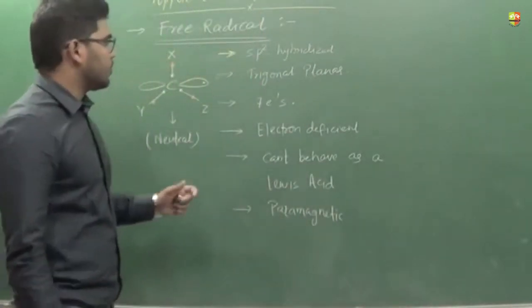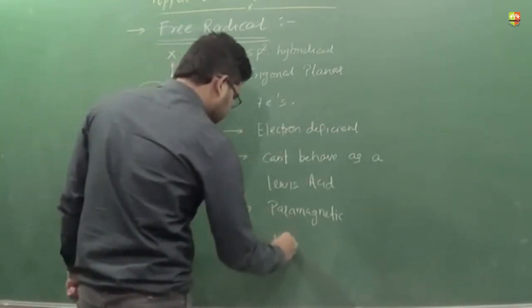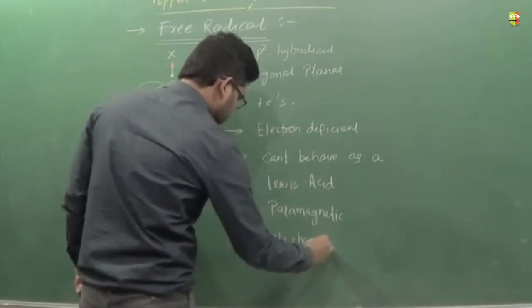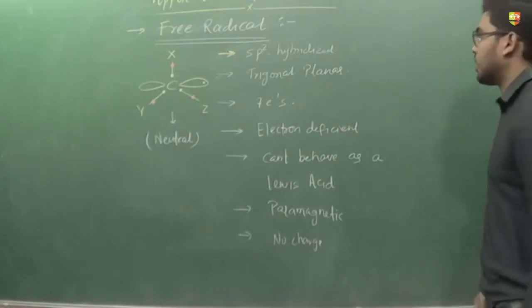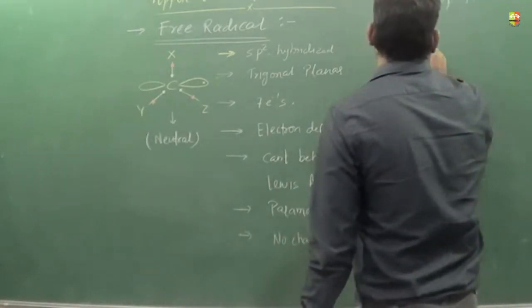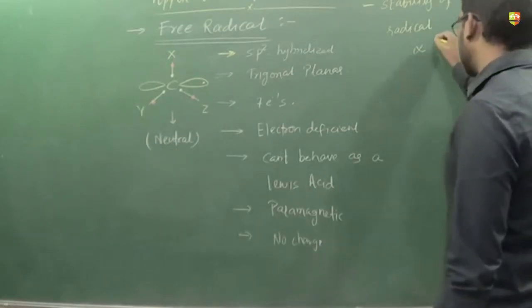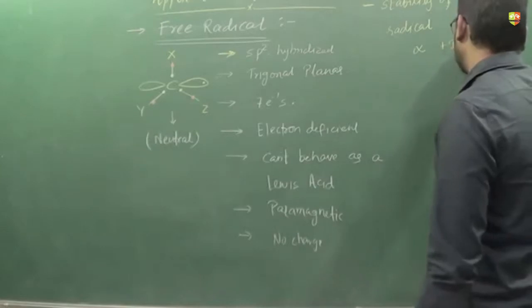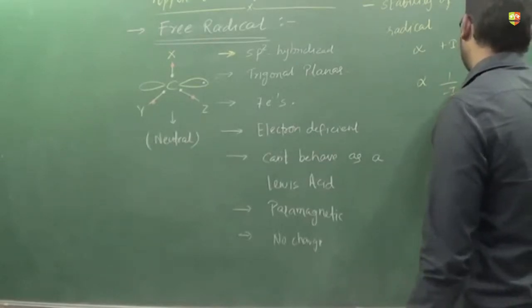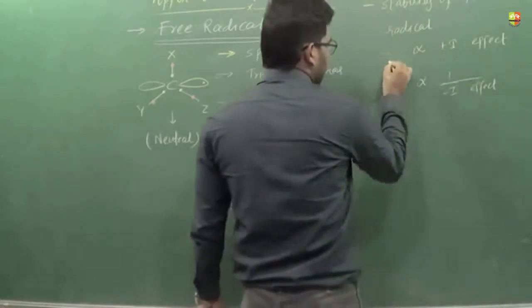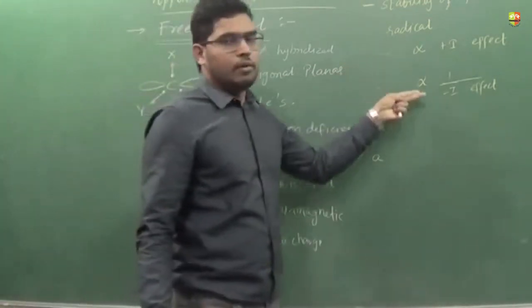These are a few differences between the two you can keep in mind. The free radical has no charge on it, while the carbocation has one positive charge. The stability factor is also the same as that of carbocation: stability of free radical is directly proportional to plus I and inversely proportional to minus I.